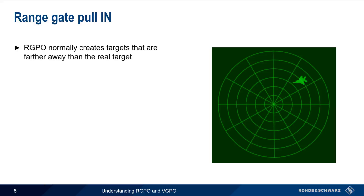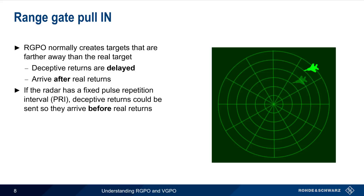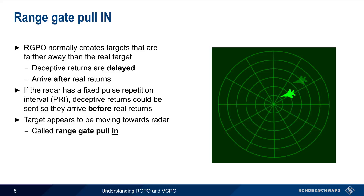Range Gate Pull-Off normally creates false targets that are farther away than the real target, because the deceptive returns are delayed and arrive after the real returns. Range Gate Pull-Off can work on radars with either a fixed or a variable pulse repetition interval. In the case of a fixed PRI, the deceptive returns could be sent such that they arrive before the real returns. This would cause the target to appear to be moving towards the radar, and thus is called Range Gate Pull-In.